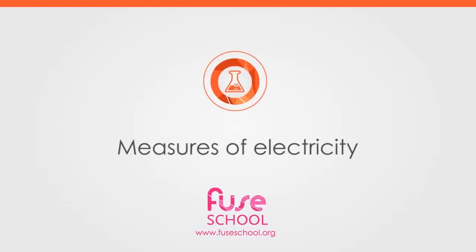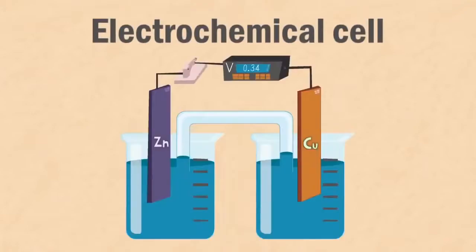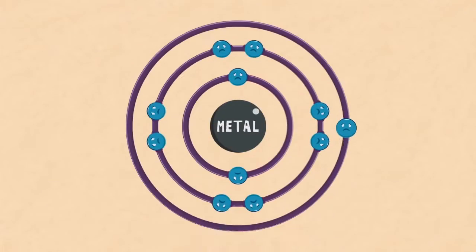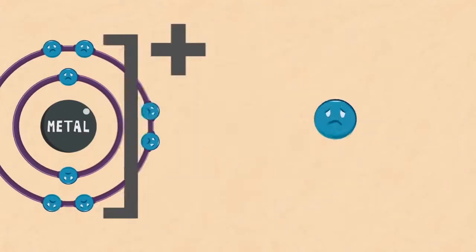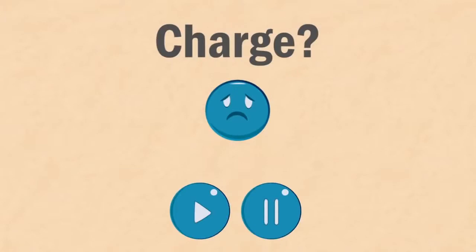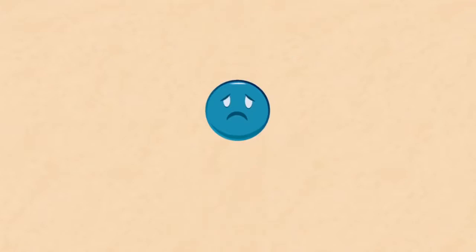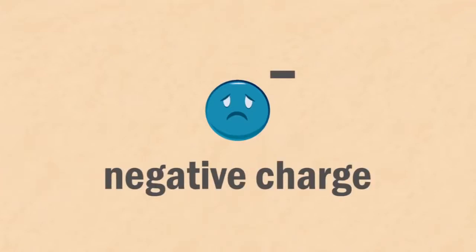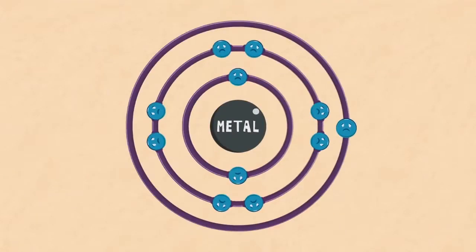In this video, we are going to learn about measures of electricity by considering an electrochemical cell. When metals form ions, they give away one or more electrons. Can you remember the charge on the electron? Pause the video and continue when you are ready. The correct answer is that electrons have a negative charge.